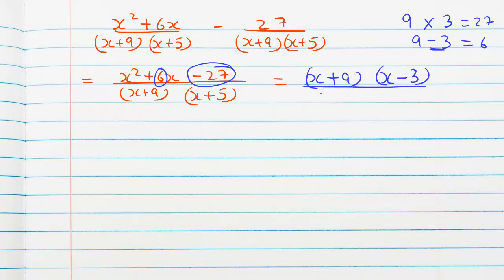All this over x plus 9 times x plus 5. Remember I told you we will factor this later on and it will cancel out. So x plus 9, x plus 9 cancels out, and our final answer is x minus 3 over x plus 5.